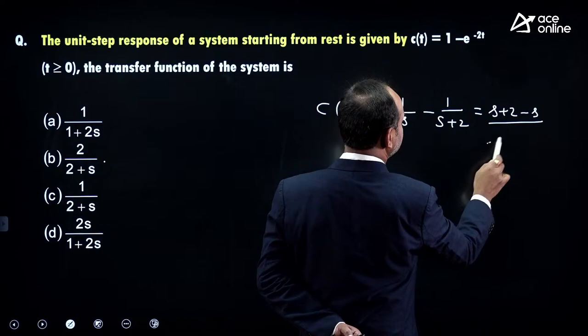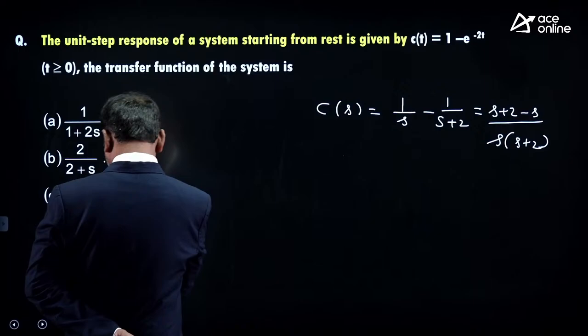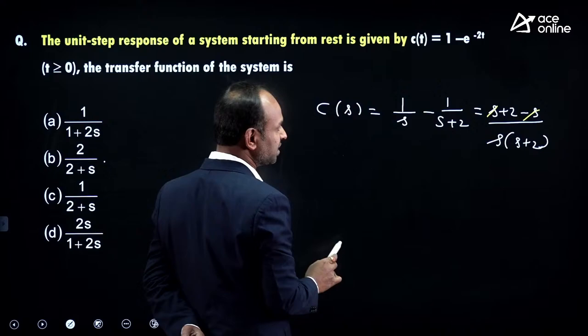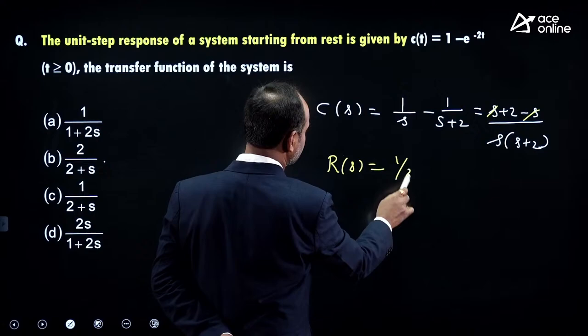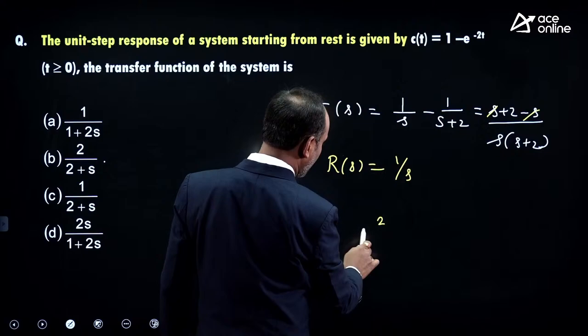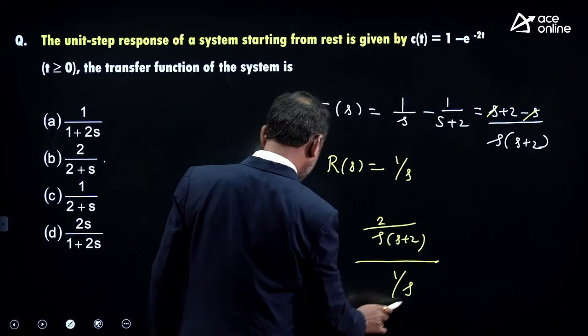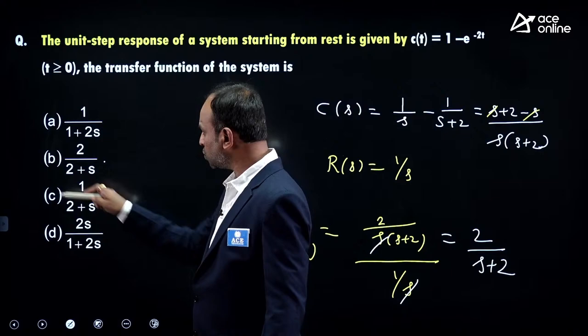Since S cancels in the numerator, C(s) = 2/[s(s+2)]. The input is unit step, so R(s) = 1/s. Transfer function = C(s)/R(s) = [2/(s(s+2))] / (1/s). S cancels, giving transfer function = 2/(s+2). That is the best suitable answer.